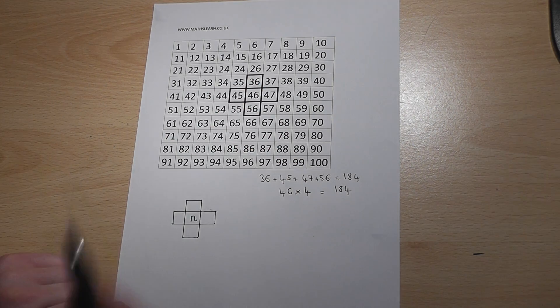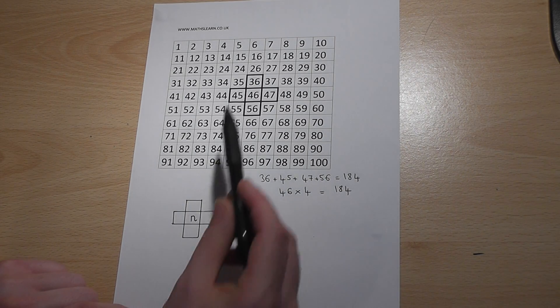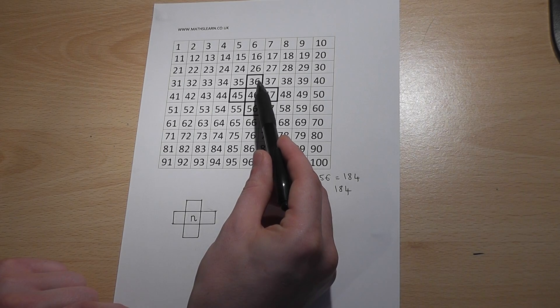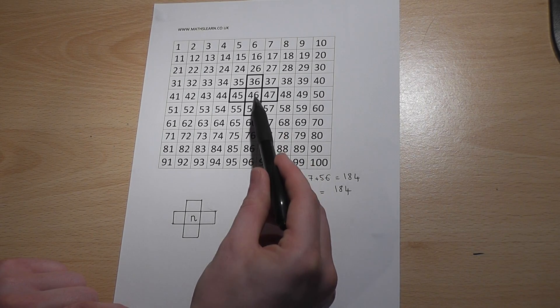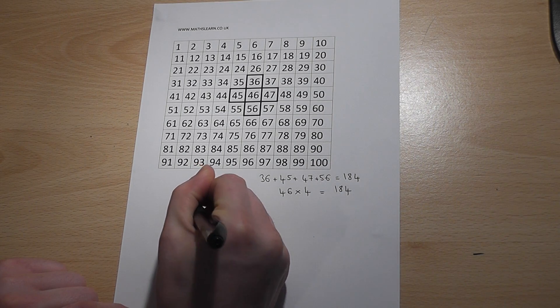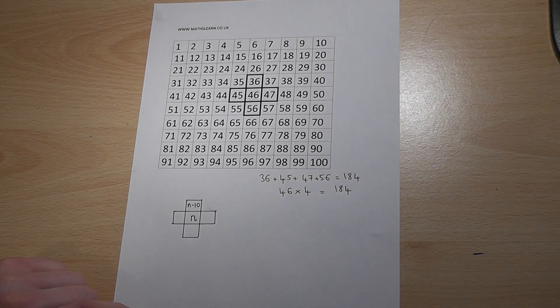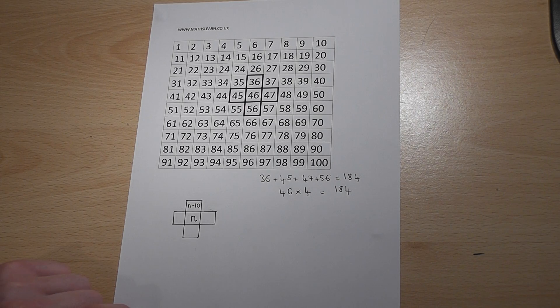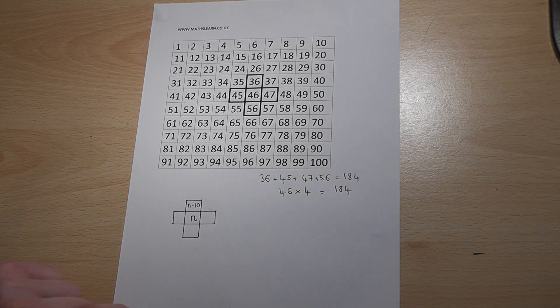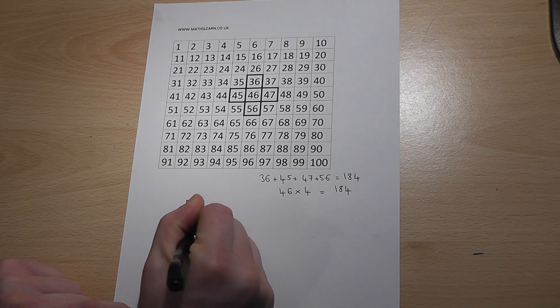15, it doesn't matter. However, wherever you draw the cross shape, the number above will always be 10 less than the centre number, so this is n take 10. The number below will always be 10 more than the number, n plus 10.